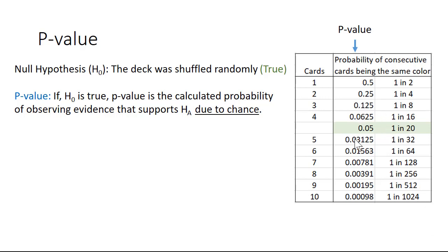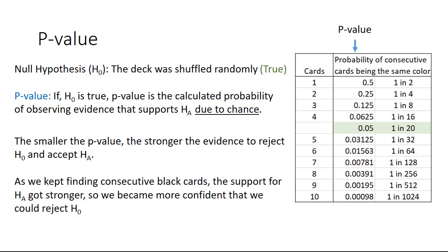The probability of getting these due to chance, as we kept drawing successive cards, just kept going down and down and down. The smaller the p-value, the stronger the evidence to reject the null hypothesis and accept the alternate hypothesis.